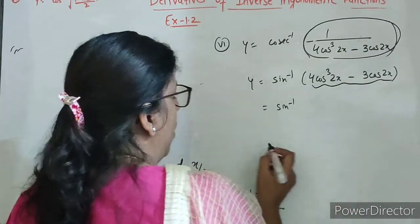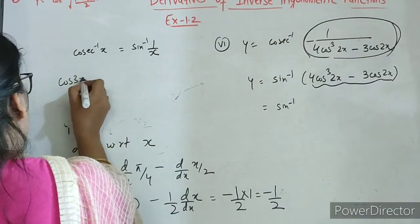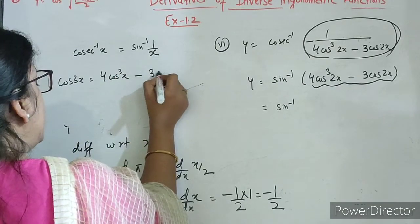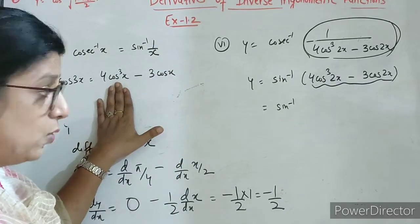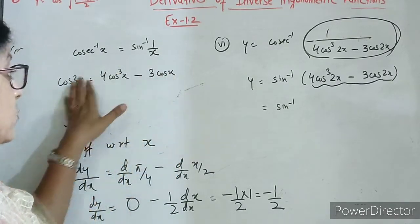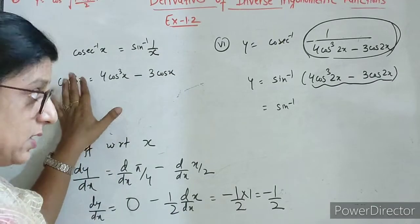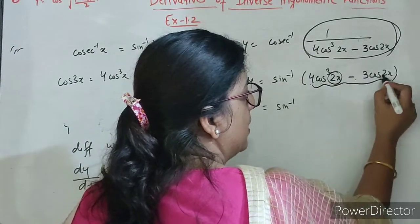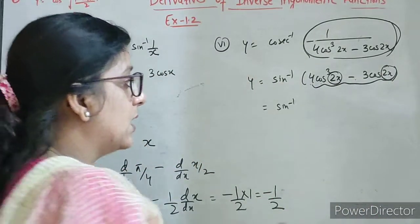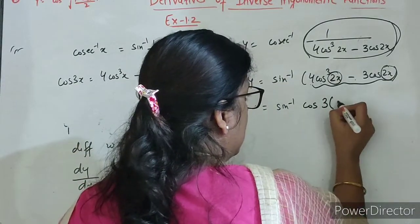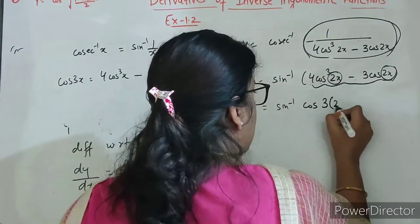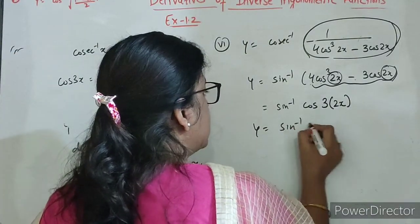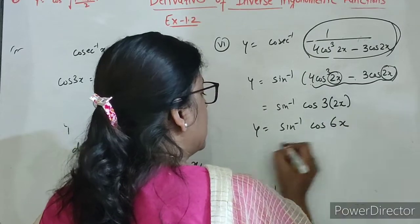Now students, this is the formula of cos 3x: it is 4 cos cube x minus 3 cos x. X hai, toh yahaan par 3x aata hai — uska 3 times. Toh dhyan se dekho: 4 cos cube 2x minus 3 cos 2x — toh idhar kya aana chahiye? Cos 3x. Toh x ke place par 2x, matlab this we can write as sine inverse cos 6x. Again the same problem — with sine we are getting cos.